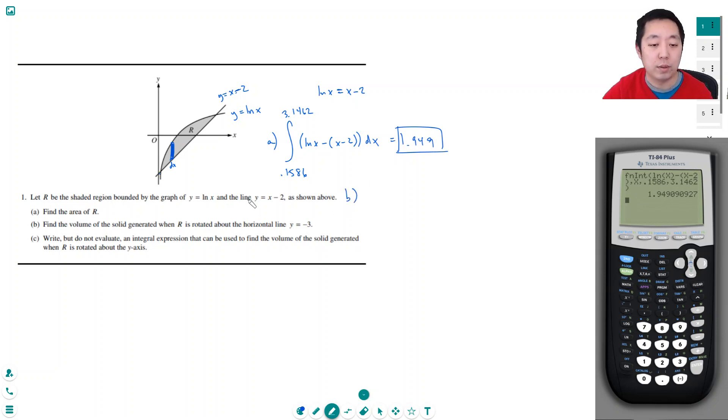Part B: Find the volume of the solid generated when R is rotated around the horizontal line y equals 3. So y equals 3 is this line here, like say it's up there. And so I look at my representative rectangle and then I figure out what it makes—a disk, right, it sweeps out a disk with a hole in the center.